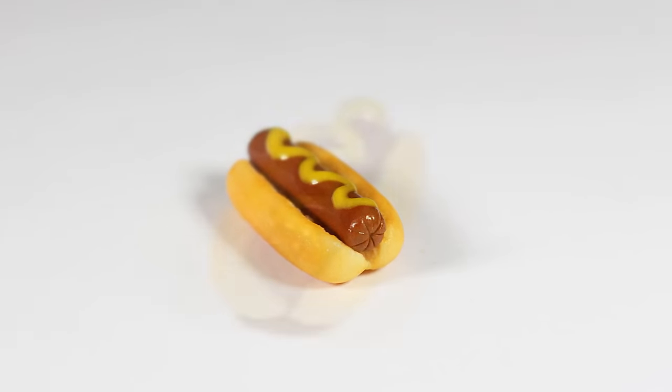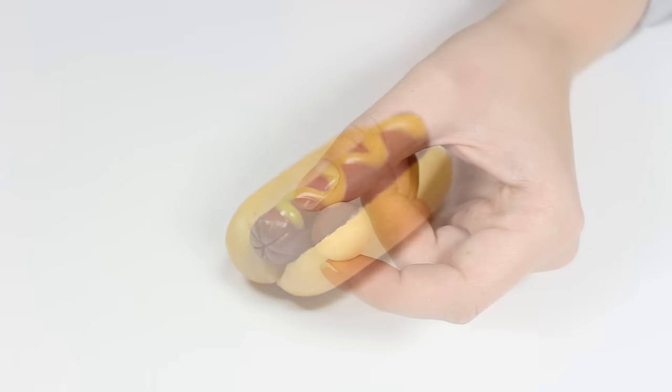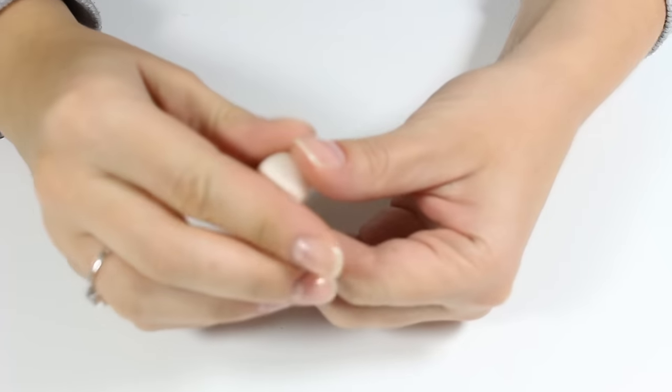Today I'm going to show you how to make a quick and easy basic hot dog charm. First off, I'm going to take a ball of tan clay and roll it out gently to get a nice cylinder.